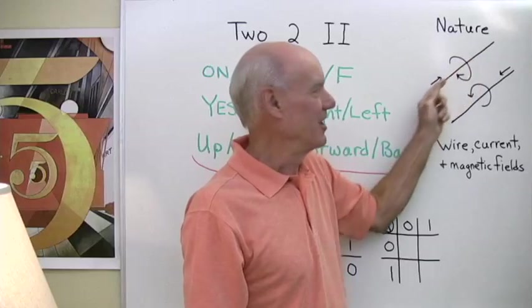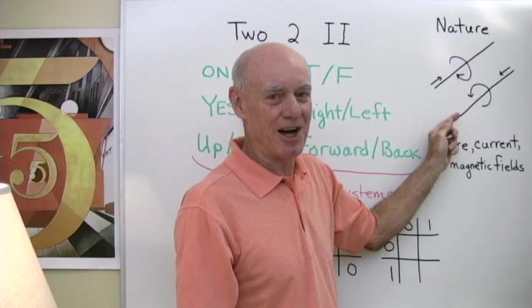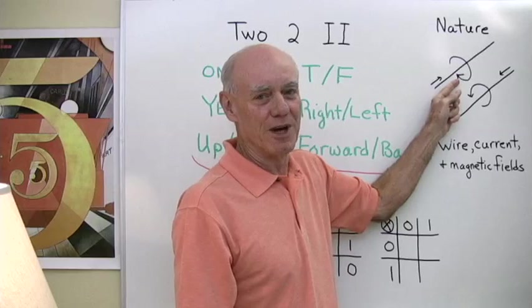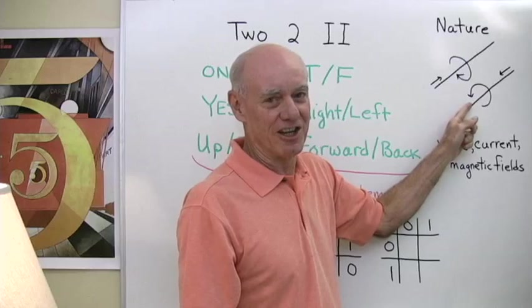So current through a wire can only go in one of two directions and can't do it at the same time and every time it does, a magnetic field forms around the wire in one case in one direction, in the other case in the other direction.